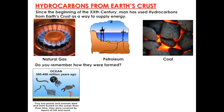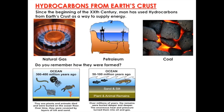From 300 to 400 million years ago, tiny plants and animals died and were buried at the ocean floor. Over time they were covered by layers of silt and sand. Between 50 to 100 million years ago, the remains were buried deeper and deeper, and the enormous heat and pressure turned them into oil and gas.